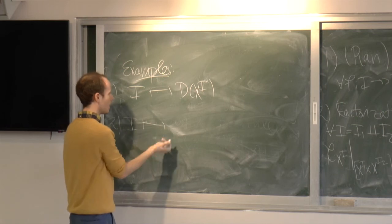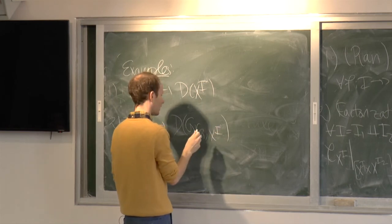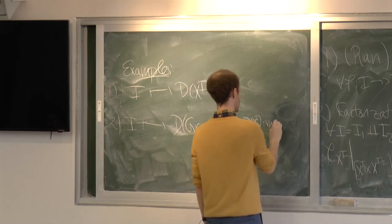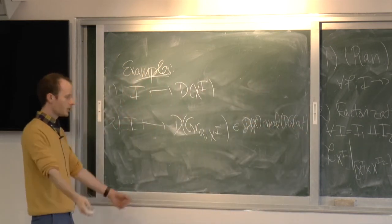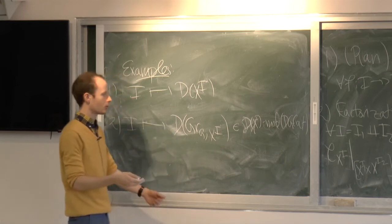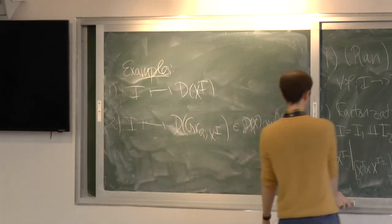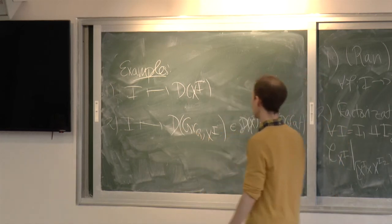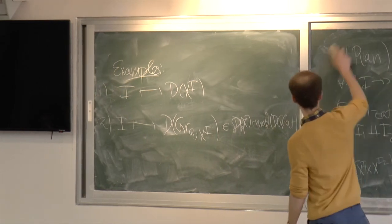So now some examples. The first, easiest example: if I attach to a finite set I the category D(X^I) considered as a module category over itself, this factorizes. This is an analog of the fact we saw yesterday that ω defines a factorization algebra on X. The second example: if we send I to the category D(G_X^I), I can think about this as a D(X^I)-module category, because any time I have a map Y → X, I can think about D-modules on Y as a D(X)-module category by the operation pullback and tensor.